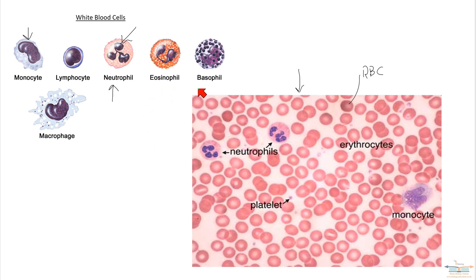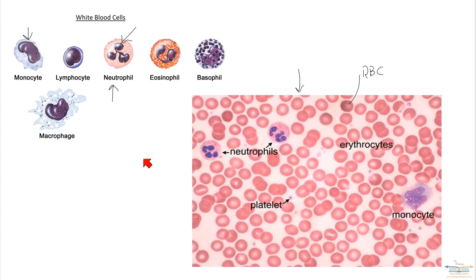You don't need to worry too much about the other white blood cells like eosinophils and basophils, as they can be difficult to identify. As long as you can identify a neutrophil with its multi-lobed nucleus, and possibly a monocyte, that should be fine. The function of white blood cells is to provide protection from diseases, with each type playing a slightly different role. That's really what you need to know about blood cells — a short simple video.